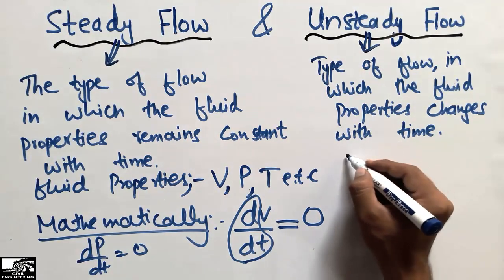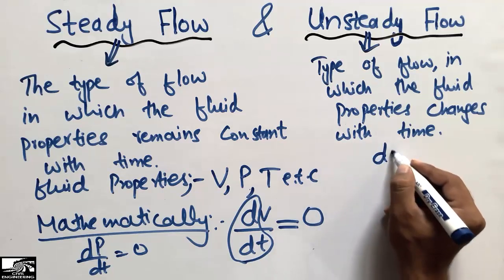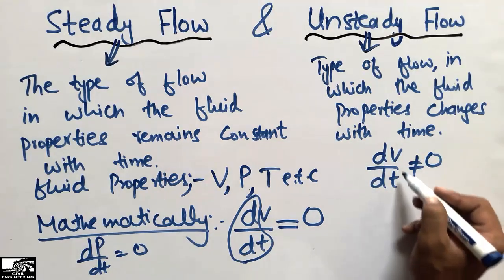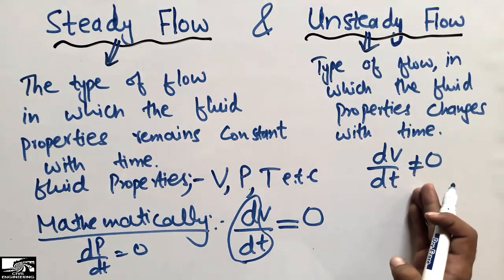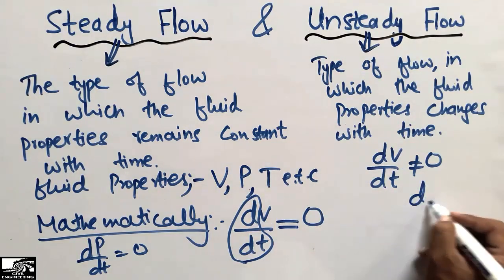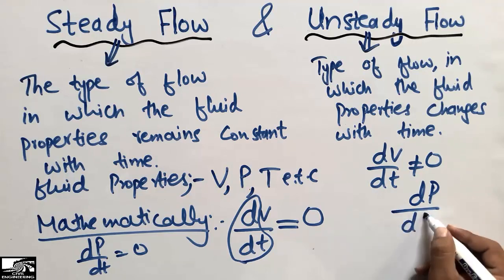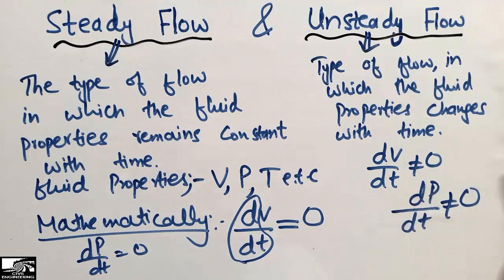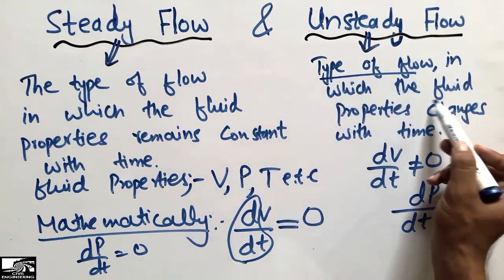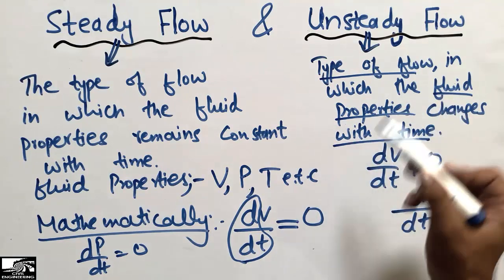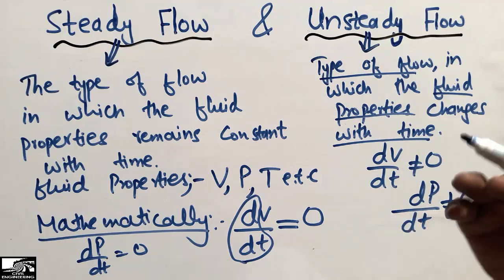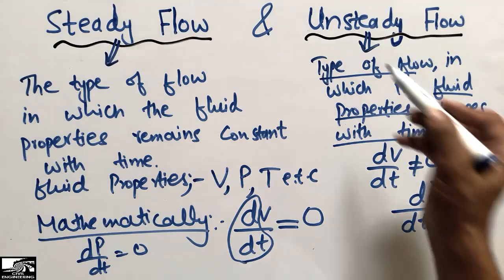Mathematically, for unsteady flow, the derivative of velocity with respect to time is not equal to zero, because the velocity is now changing with time — the velocity at one time is different from the velocity at another time. Similarly, the pressure at one point differs from another. All fluid properties such as velocity, pressure, temperature, and enthalpy change with time, so we call this type of flow unsteady flow.